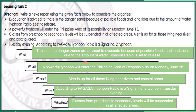For learning task 2, write a news report using the given facts below to complete the organizer. Start with who — those in endangered zones are advised to evacuate because of the possible floods and landslides due to the amount of water Typhoon Pablo is set to release.